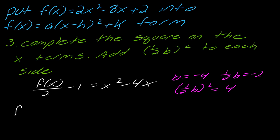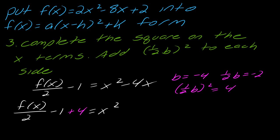I've got f(x) over two minus one, and now I want to add that four to this side, and then again to this side. So I've completed the square. Now I want to collect my like terms and factor.